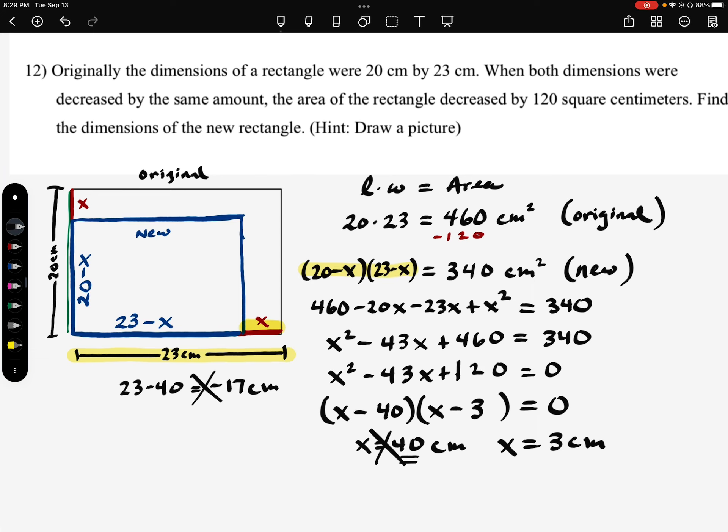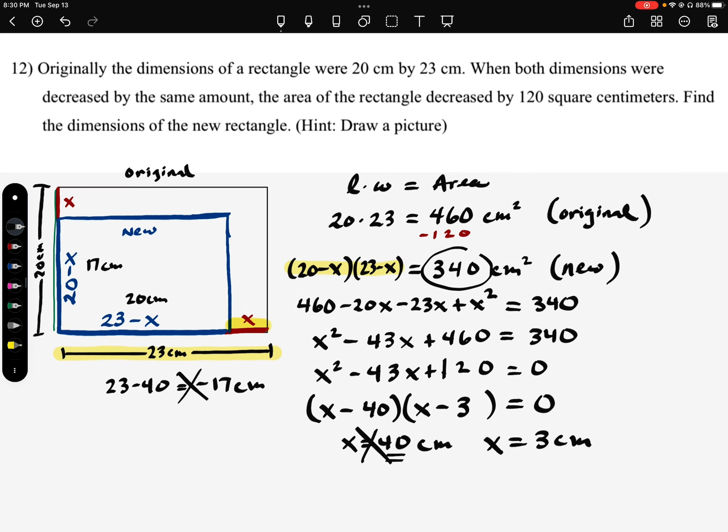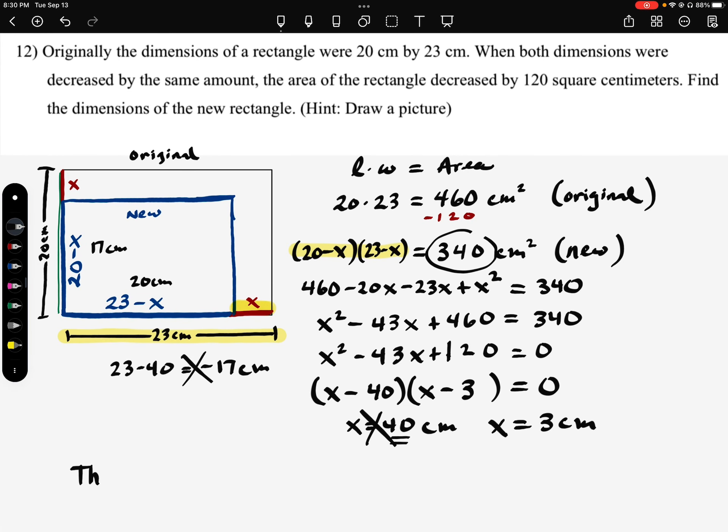And then if we check with our 3, it makes a little bit more sense. 23 minus 3 would give us 20 and 20 minus 3 would give us 17. So we'd have 17 there. We'd have our 23 minus 3 would be 20 here. So our new rectangle has the dimensions of 17 by 20. And if we multiply 17 times 20, that's going to give us 340, which is what our area was. Now the directions state, find the dimensions of the new rectangle. So the dimensions of the new rectangle are 17 centimeters by 20 centimeters.